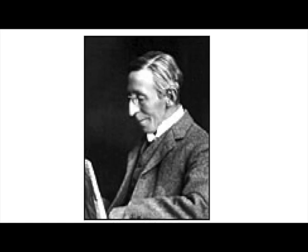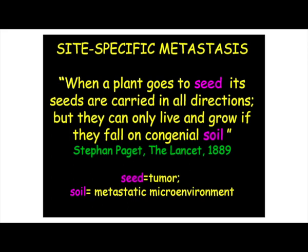This gentleman, 125 years ago, provided an answer that is still valid for many of us. His name is Stephen Paget. He published this article in The Lancet in 1889, and he was very much concerned with site-specific metastases. He wrote: when a plant goes to seed, its seeds are carried in all directions, but they can only live and grow if they fall on congenial soil. If you translate this into today's nomenclature, the seed would be the tumor, and the soil would be the metastatic microenvironment.